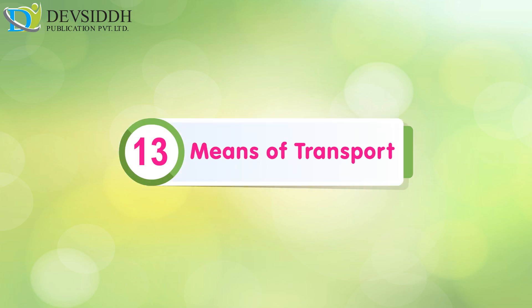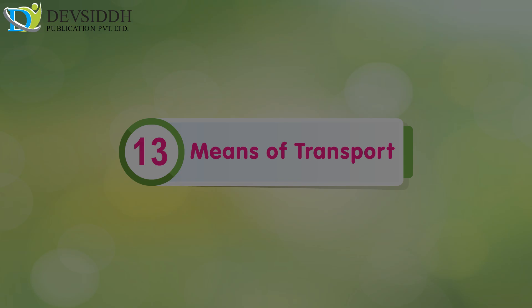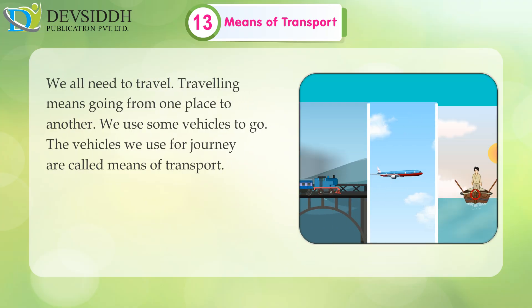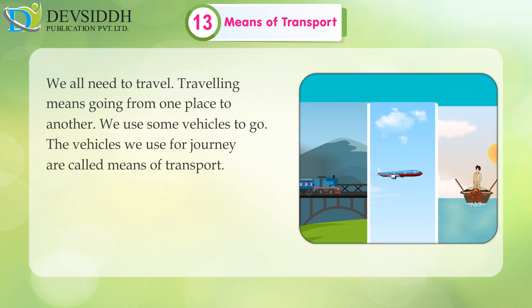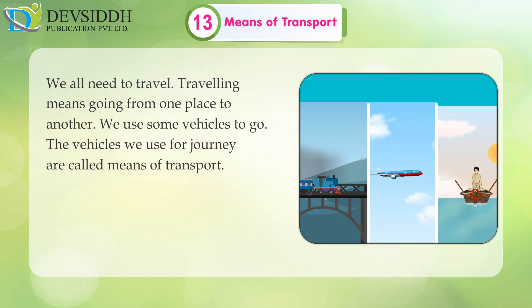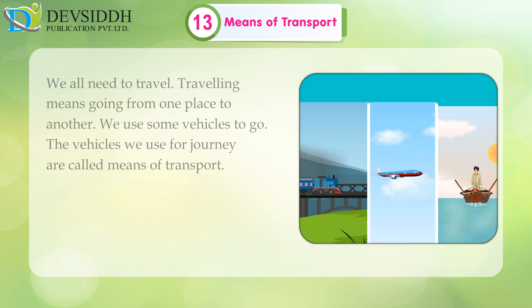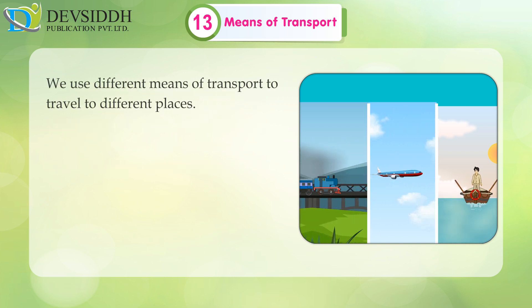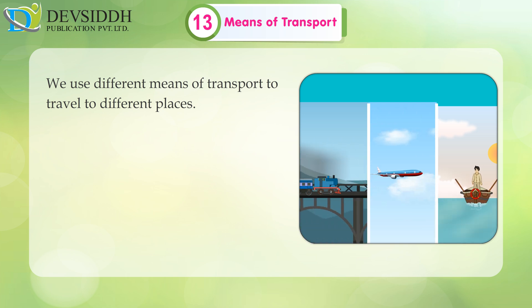Chapter 13: Means of Transport. We all need to travel. Travelling means going from one place to another. We use some vehicles to go. The vehicles we use for a journey are called means of transport. We use different means of transport to travel to different places.